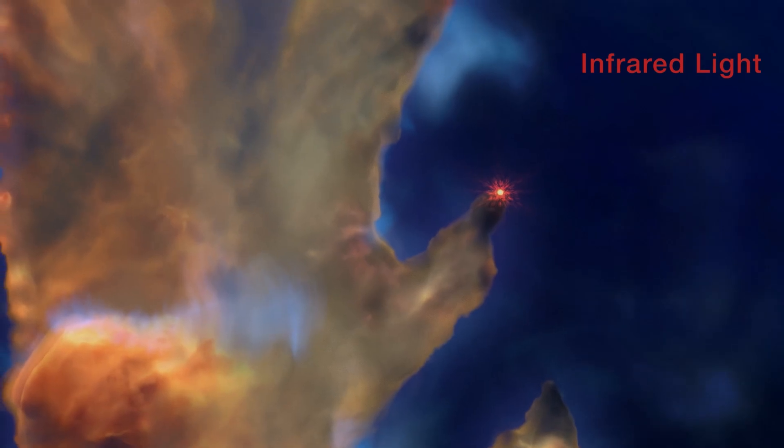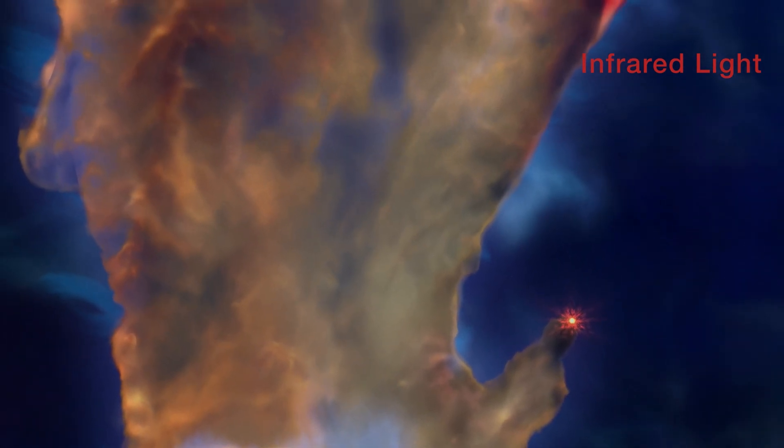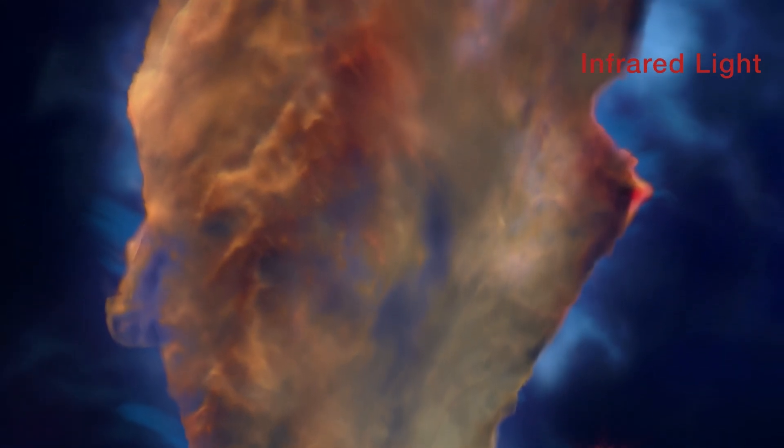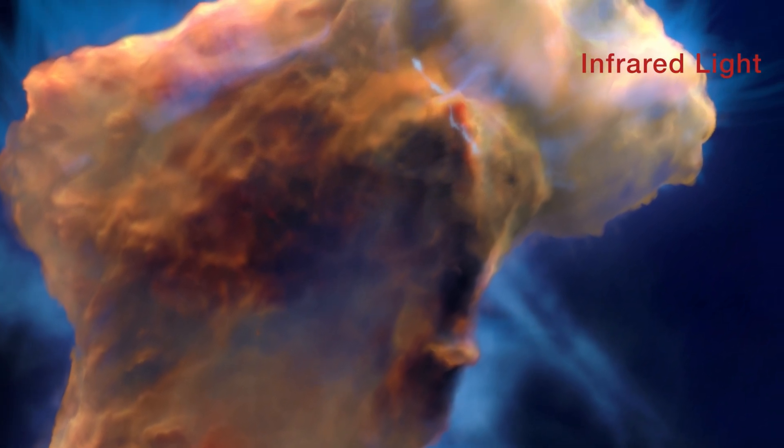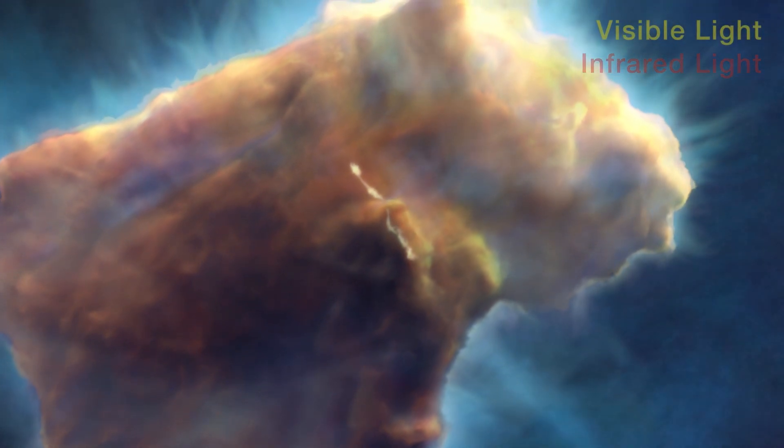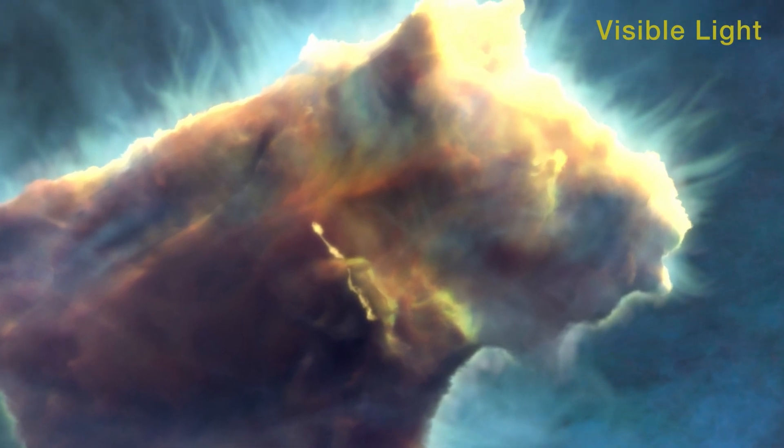The pillars themselves are as much as five light-years tall, or over 45 trillion kilometers. Appearing to the upper right is a bipolar jet of gas, the sign of a newborn star, with those plumes of gas speeding away at 200 kilometers per second.